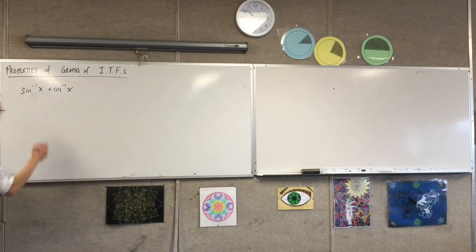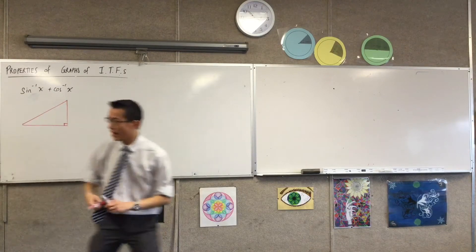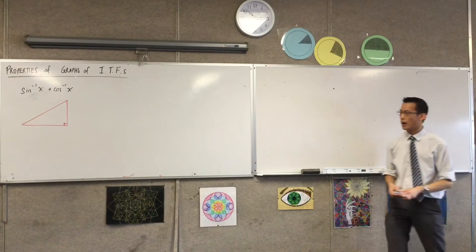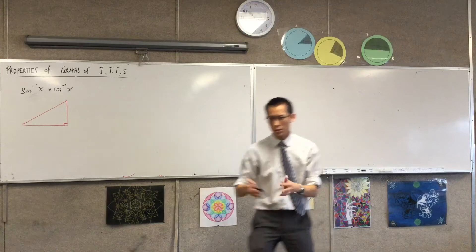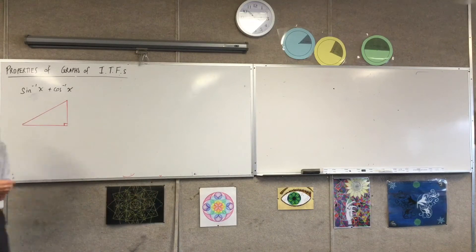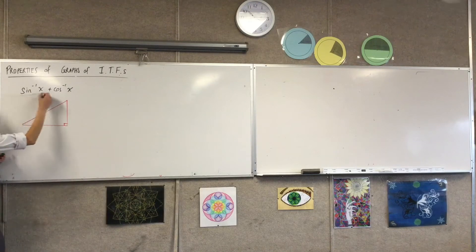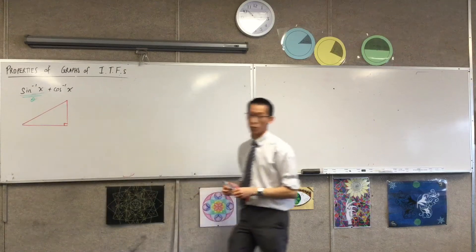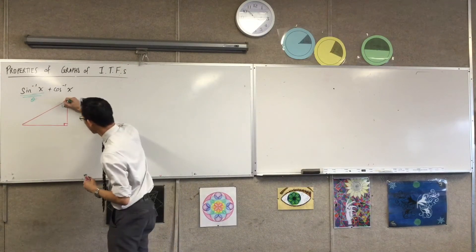So remembering that these are about angles, draw for me a triangle. Okay, now, sine inverse of x, it exists inside a triangle of some kind. It's an angle in a triangle. So, for instance, if I were to say, let's give this thing a name. Let's call this angle theta.